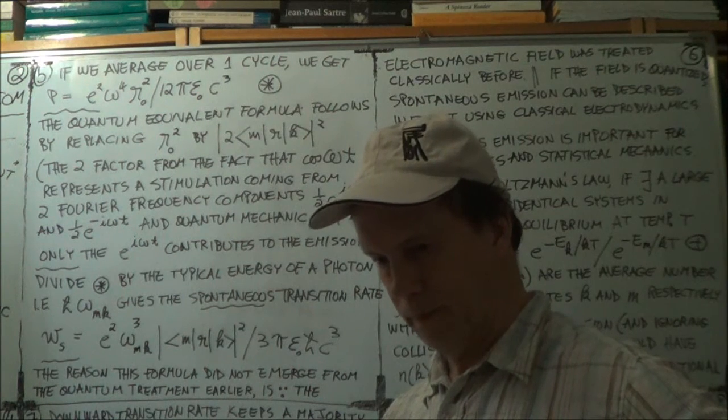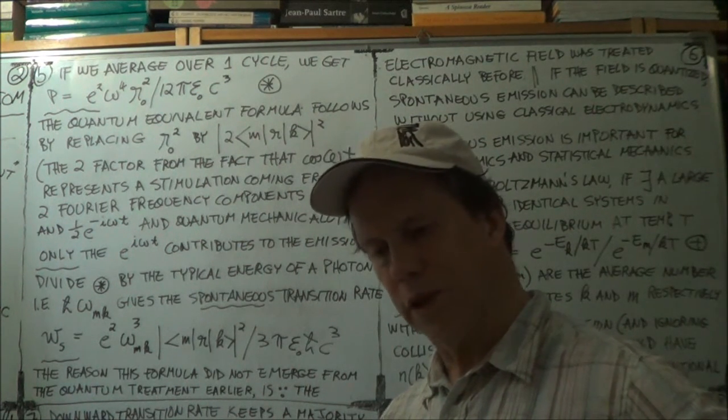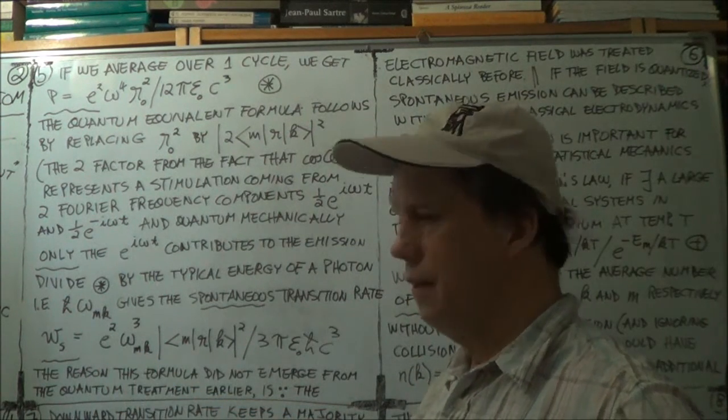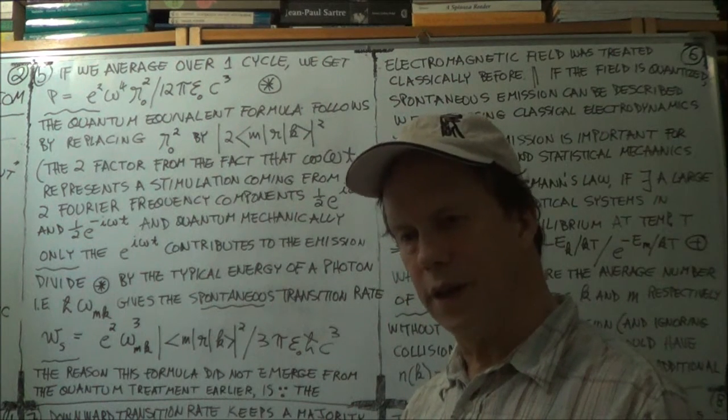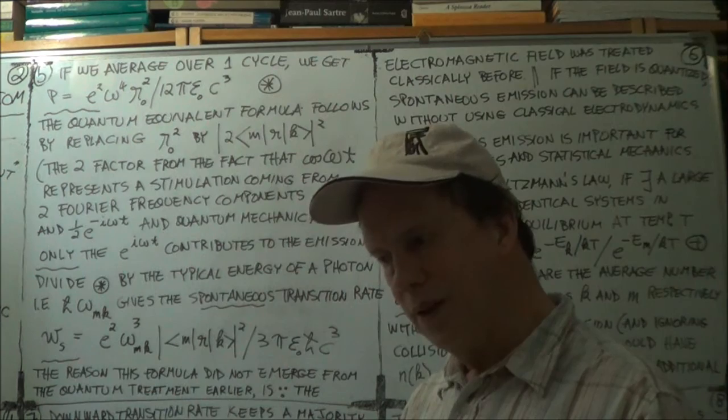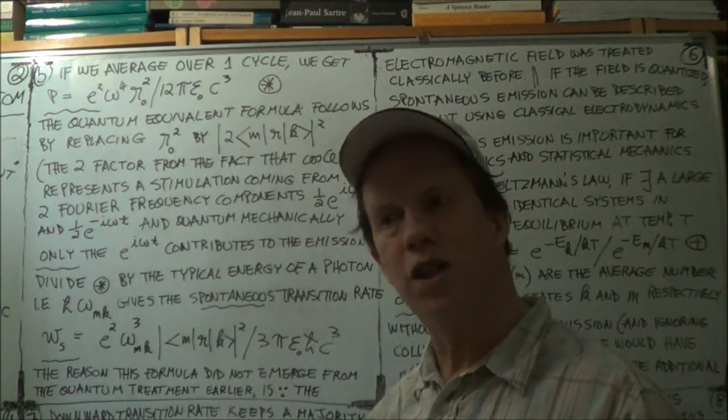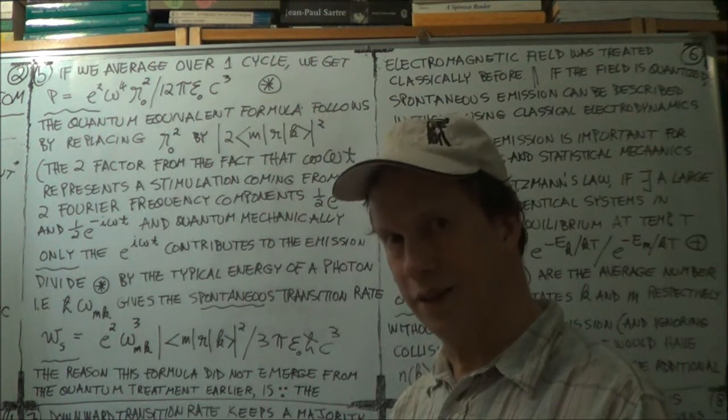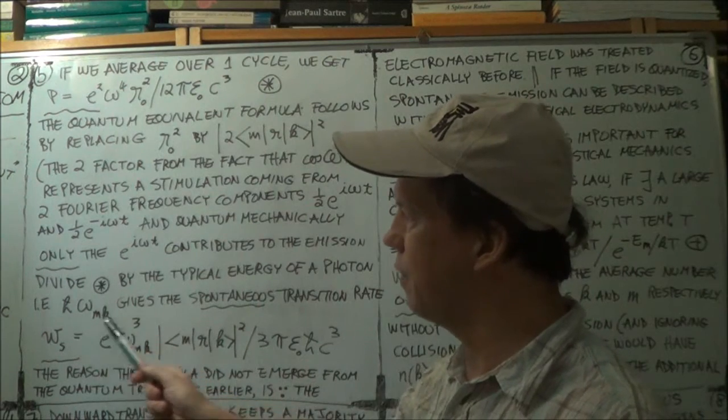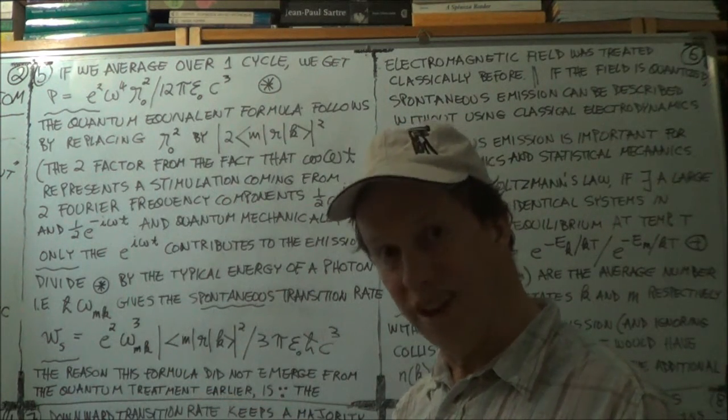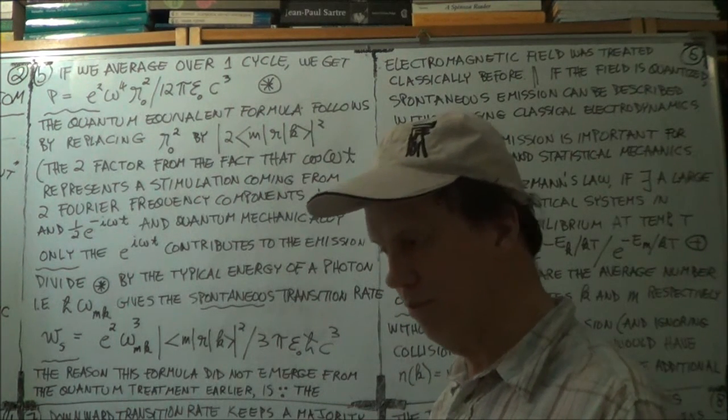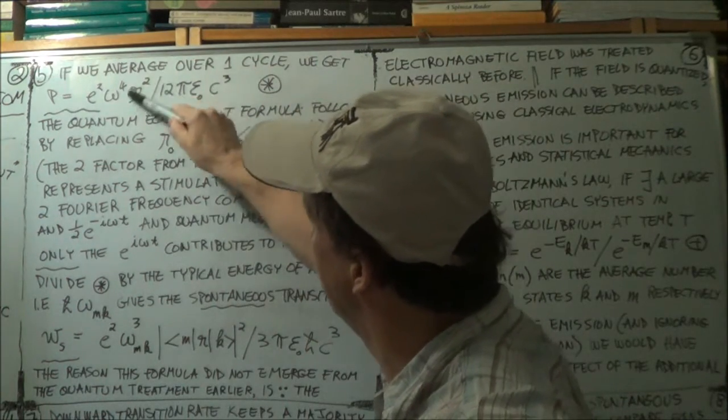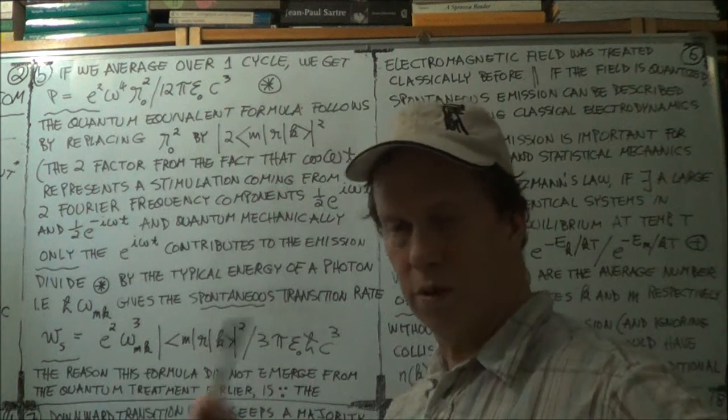Now, if we divide by the typical energy of the photon coming out, which would be this, of this frequency omega_mk, then can you see that that gives a transition rate? We're talking about power, that's energy emitted per second. Now, a rate is probability of a transition per second. So if we divide by the energy of the photon coming out, what we're left with should be the rate, the transition rate. I hope that's fairly intuitive. So plug this in here, divide by the energy of the photon, and that will give you a rate of transition.